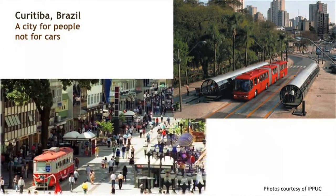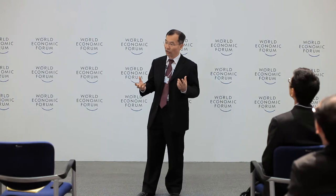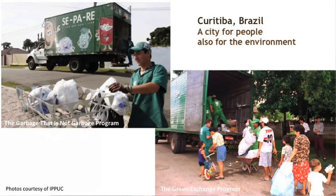Curitiba, a Brazilian city of about 1.7 million people, is a good example. Its bus rapid transit system is cheap and low cost, but so effective that it reduced car traffic by 30% while the population tripled in 20 years. The city also has recycling programs that allow even children to be productive, helping the community reduce waste and keep it clean.